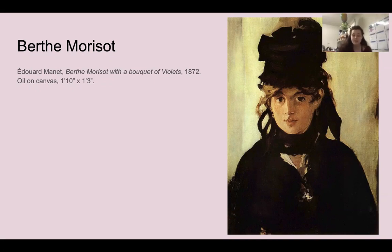Pictured here is a portrait of Morisot painted by Manet. During the impressionist movement, Morisot became friends with many impressionist painters including Degas, Renoir, and Manet, who all influenced each other's work. Many of these artists were part of a close group of friends who held exhibitions in which their work was displayed together.